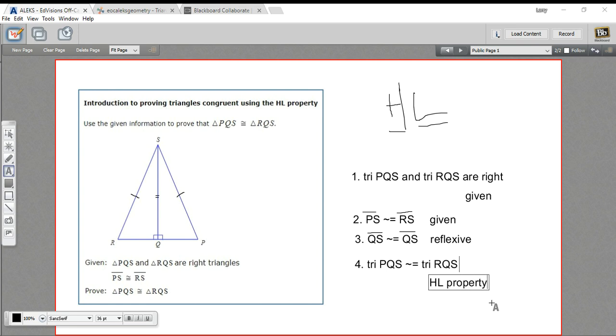And the lines here we need to refer back to. There are three pieces of information we need. We need to know that the triangles are right triangles, that the hypotenuse is congruent, and the leg is congruent. So that's lines 1, 2, and 3 that we refer to there. So that is how you would construct a proof using the hypotenuse leg property of triangle congruence.